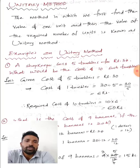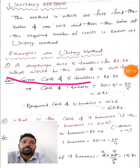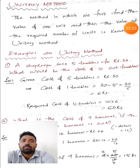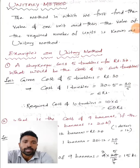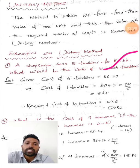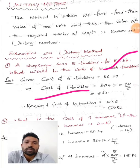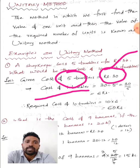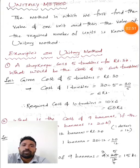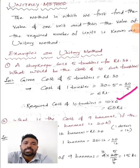Let us take some examples on the unitary method. A shopkeeper sells 5 tumblers for 30 rupees. What would be the cost of 10 such tumblers? Since we are solving by the unitary method, first we find the value of one tumbler. Cost of 1 tumbler = 30 ÷ 5 = 6 rupees. Now, cost of 10 tumblers = 10 × 6 = 60 rupees.